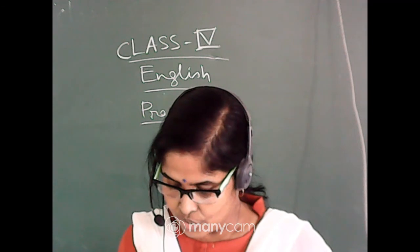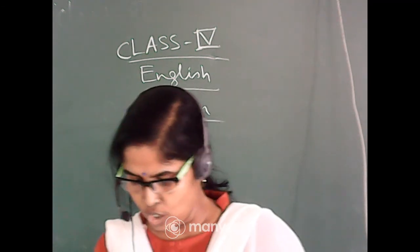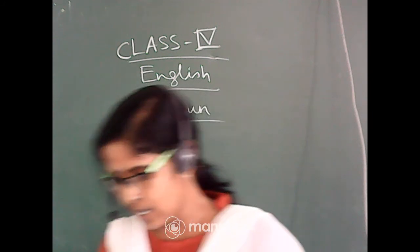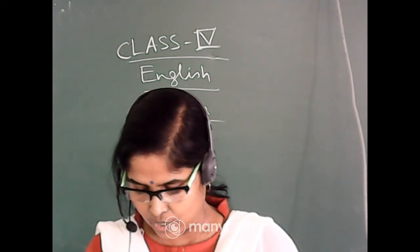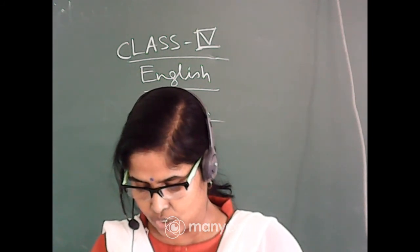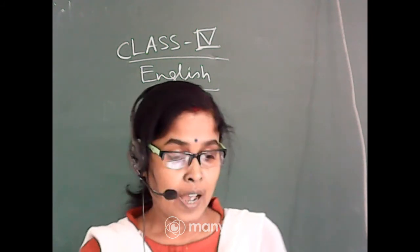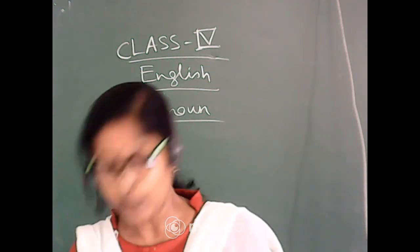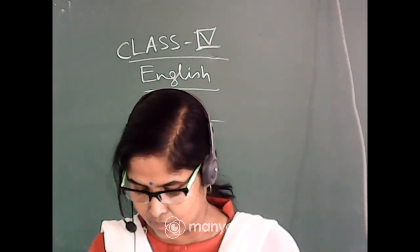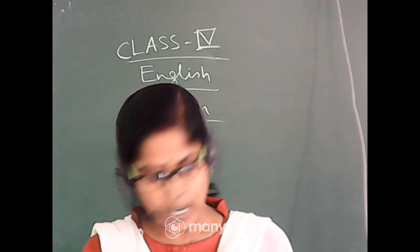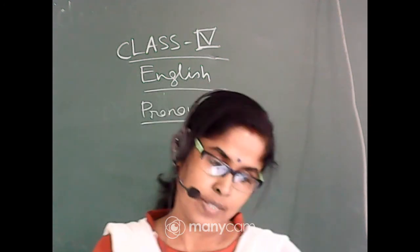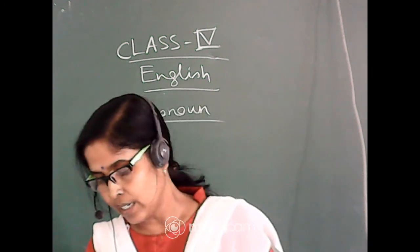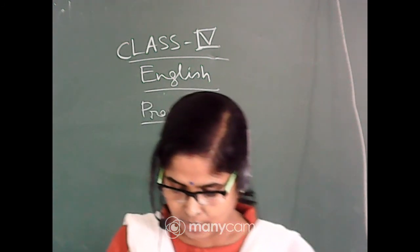Number seven: Teacher says — Children, you must not eat too much sweets. They are bad for your health. Underline 'they' and circle 'health'. Number eight: Charu, I know there are stars in the sky. Circle 'Charu', 'stars', 'sky'. Underline 'I'. Then underline 'they' and circle 'clouds'.